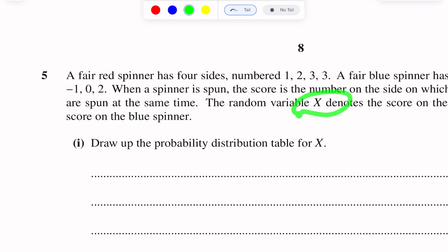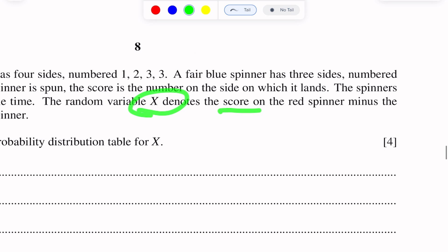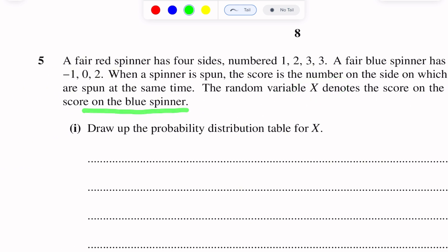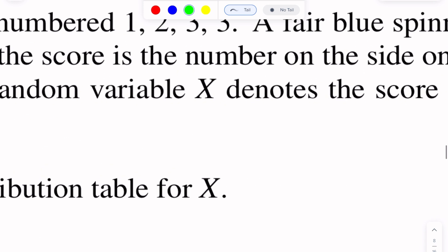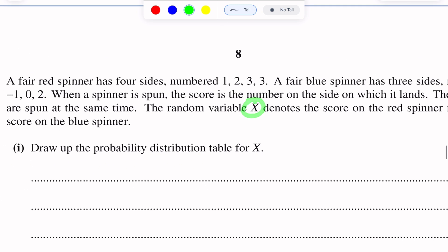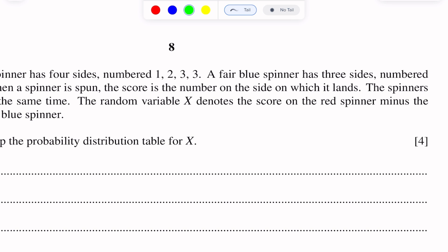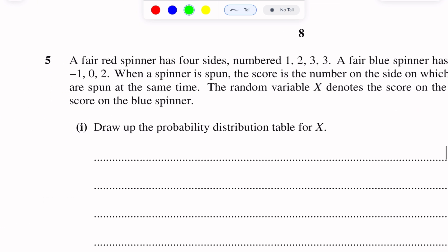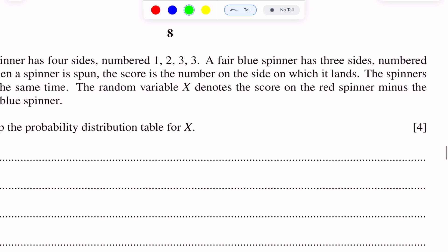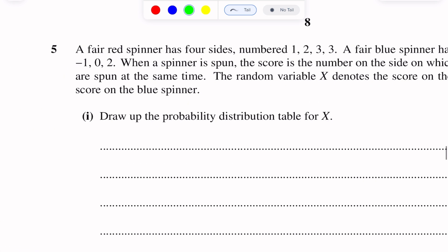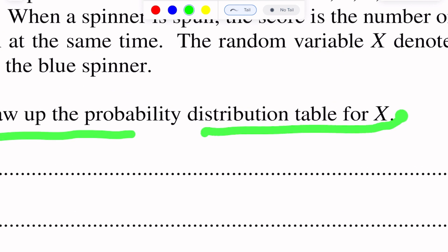The random variable X denotes the score on the red spinner minus the score on the blue spinner. We take the value of the discrete random variable X as: score on the red spinner minus score on the blue spinner. Draw up the probability distribution table for X.